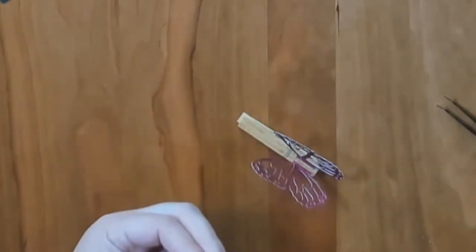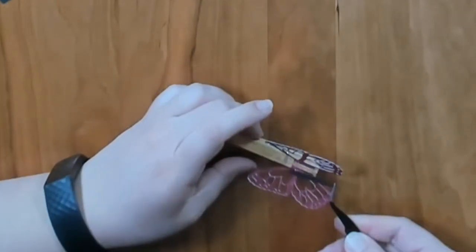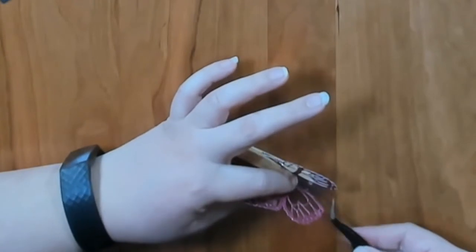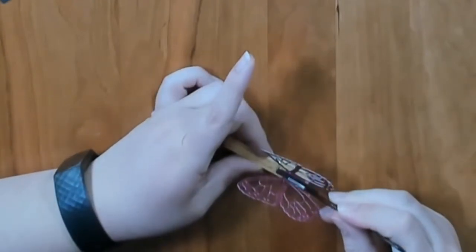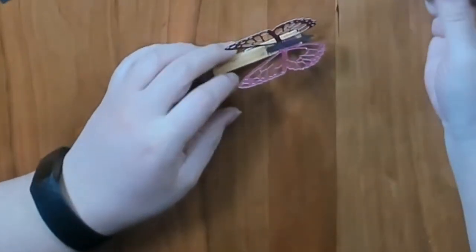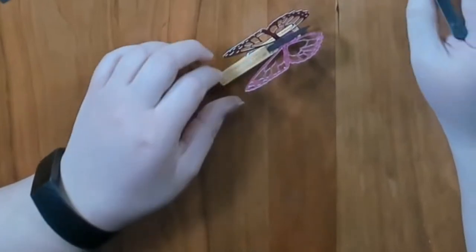We're going to do the same thing on this one and try to get it straight across from our other one. Hold that down for a second or two. And then we're going to do our center one here, or our body if you will. Guess I didn't need to put glue all the way down, but there you have our butterfly body.